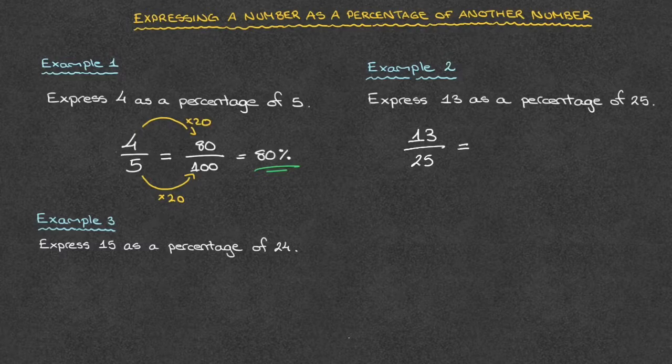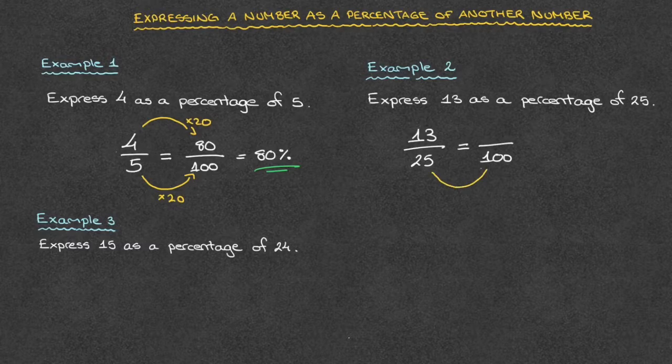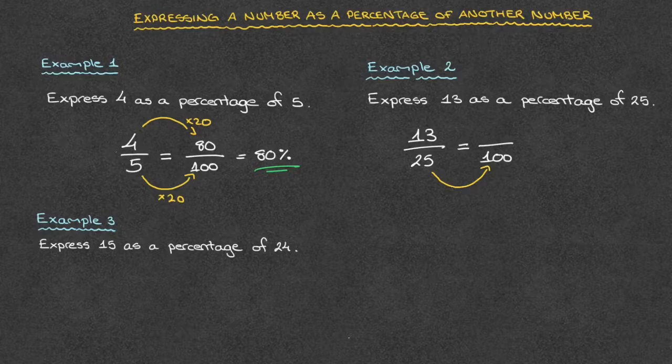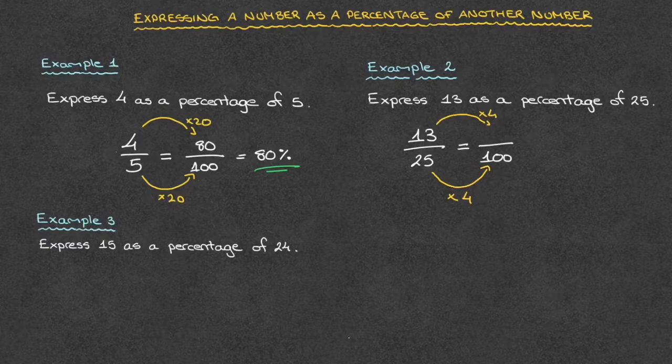Our job then consists of writing this as an equivalent fraction over 100. We then ask ourselves, what do we have to multiply 25 by to get 100? And it doesn't take us too long to see that we'd have to multiply 25 by 4. We therefore do the same on the numerators. We multiply 13 by 4 as well. And 13 times 4 is equal to 52.